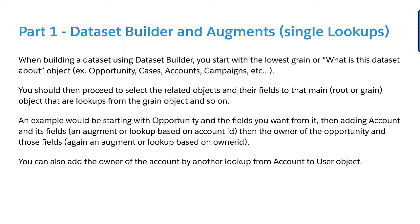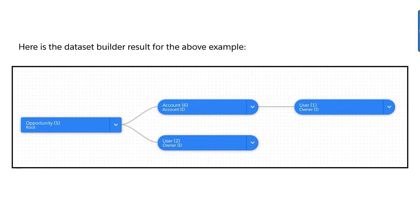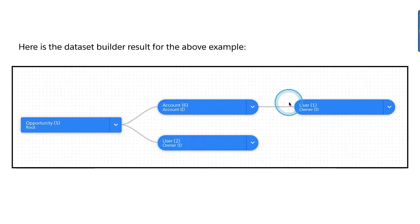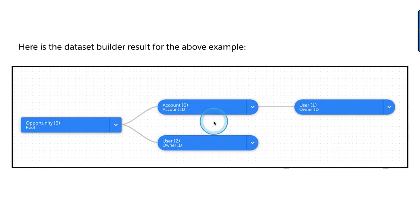The typical exercise of creating an opportunity data set starts with opportunity as the root — that is the lowest grain. Every record in this data set is going to be a unique opportunity, hence why we call it the lowest grain. Starting from here in the data set builder, we use what we call a lookup: it goes from one opportunity and grabs the one matching record from Account, and brings that account information to the opportunity level. If you have 1,000 records here, you are going to get 1,000 records in the end.